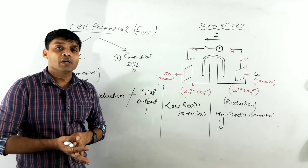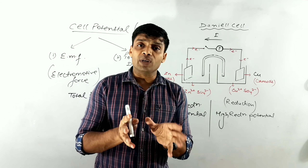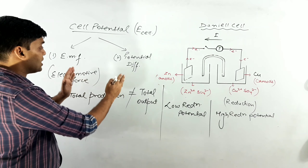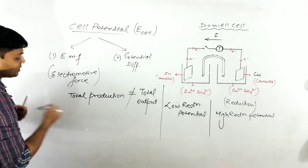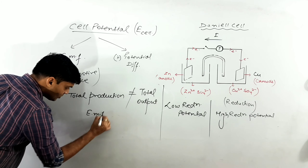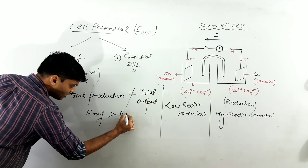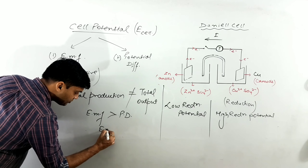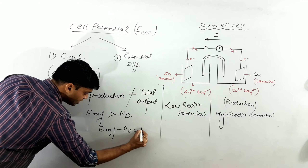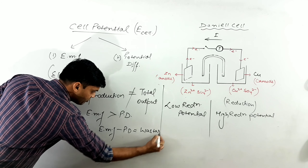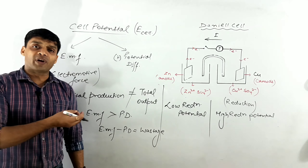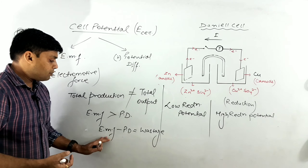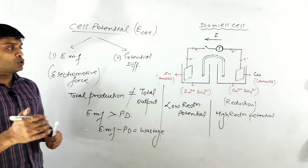Potential difference is always obtained in a closed circuit, while EMF is always present in an open circuit. EMF is never obtainable — it is just present within the cell. Potential difference is obtainable. Formal definitions: EMF is the maximum voltage present between the two terminals of the cell when the cell is in open circuit or when no current is being drawn. Potential difference is the net voltage present when the cell is in closed circuit or when current is actually being drawn from the cell.